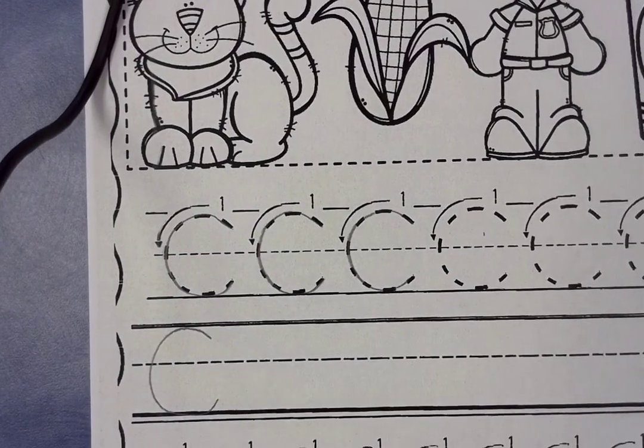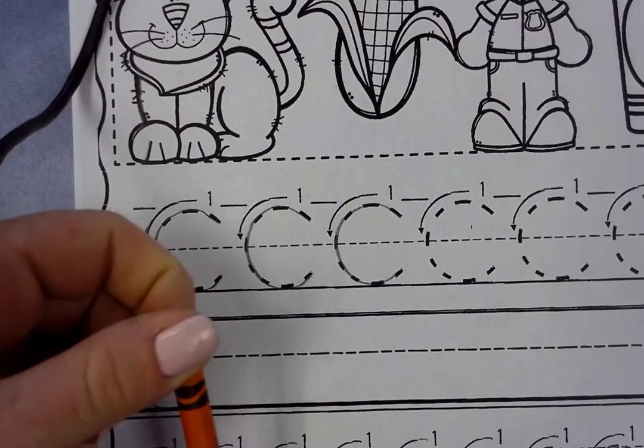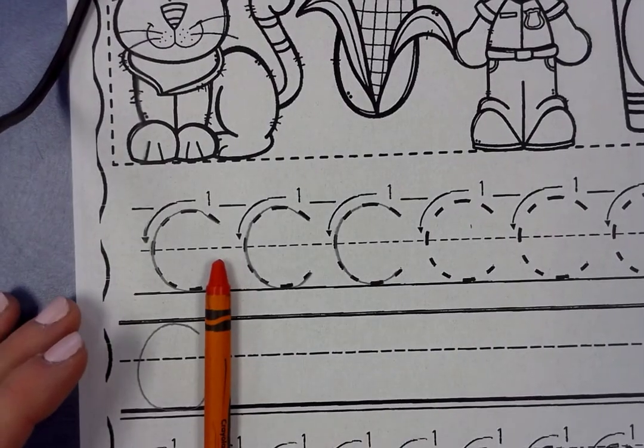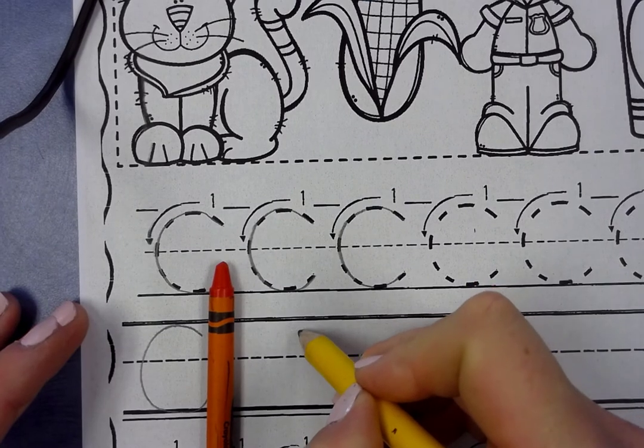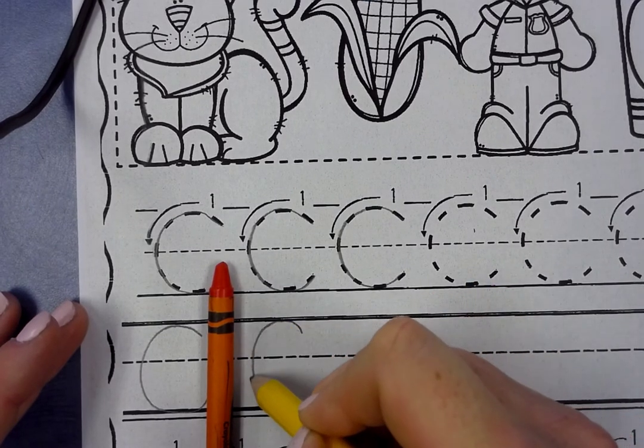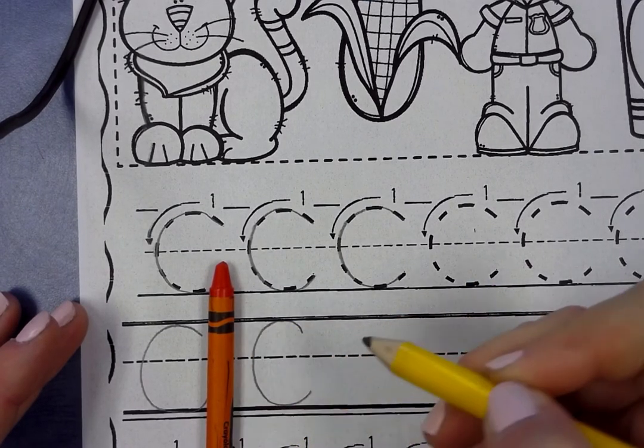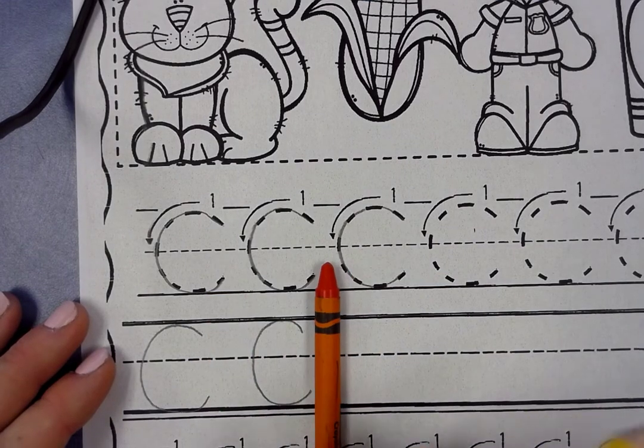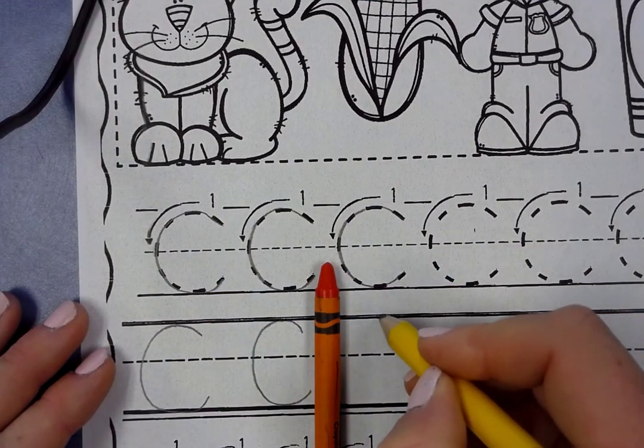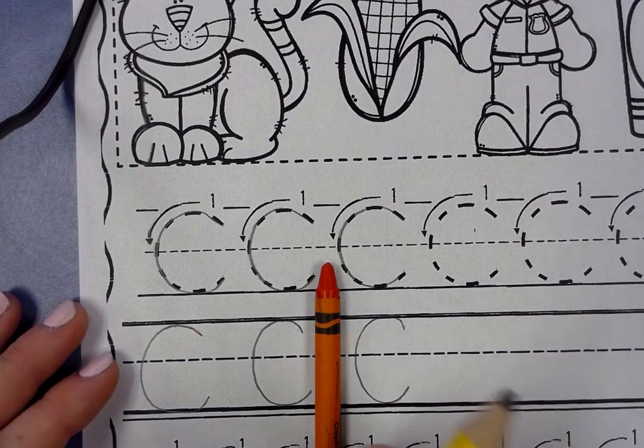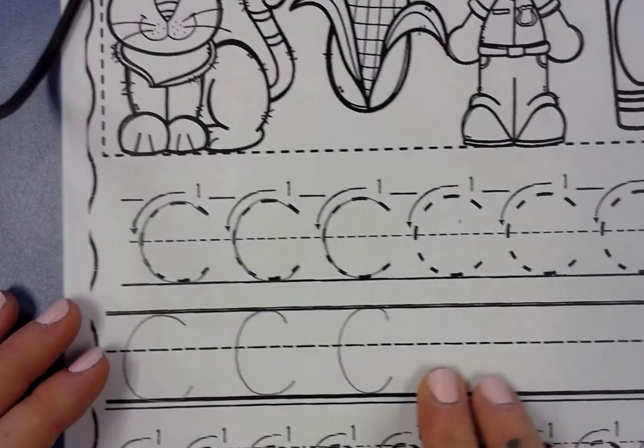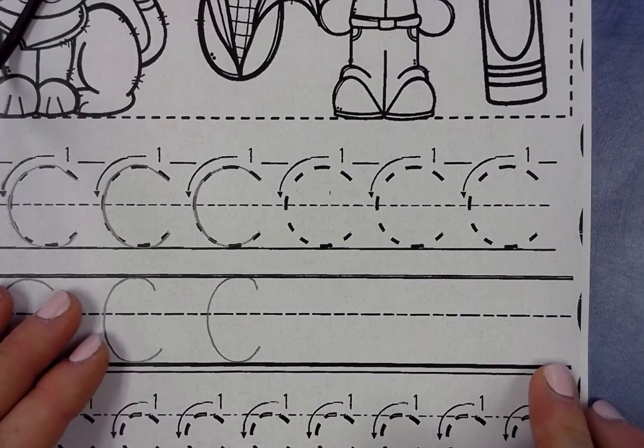I'm going to get my color out to be my finger space, and I'm going to go right above the line again, and I'm going to go up to the sky, down to the grass, and around. I'm going to move it over. Up to the sky, down to the grass, and around. There's our C's.